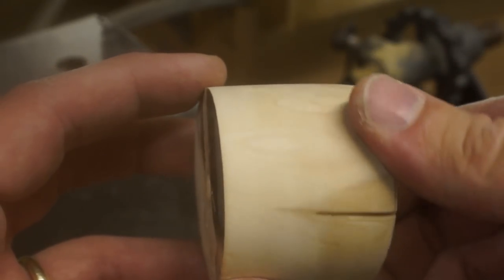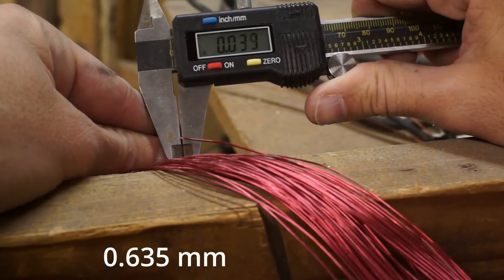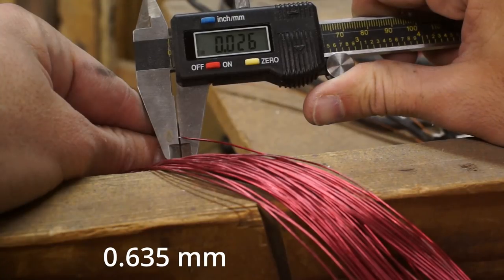These wires are used to degauss the display so they wrap around the glass. 0.0254 inches is a 22 gauge wire.